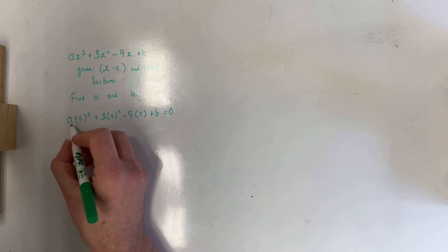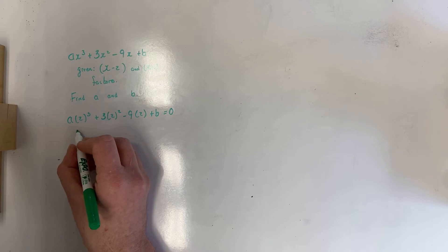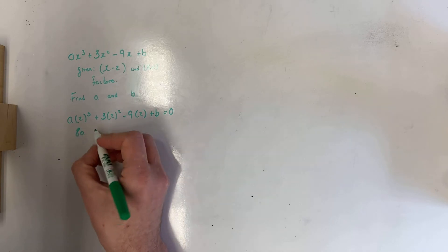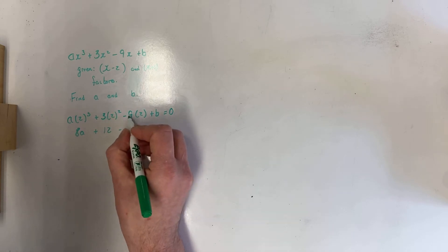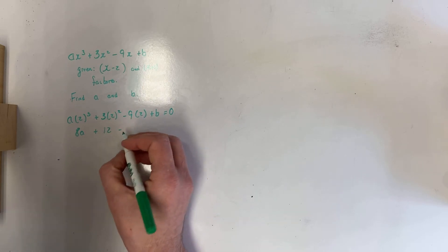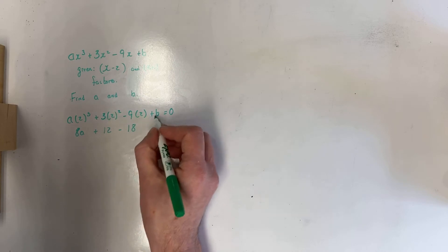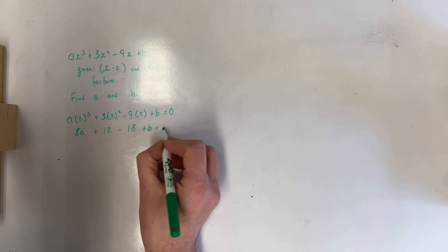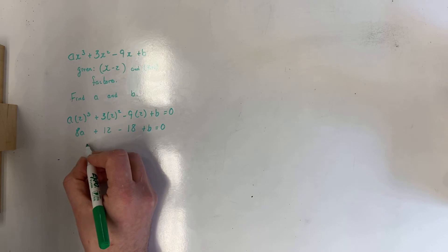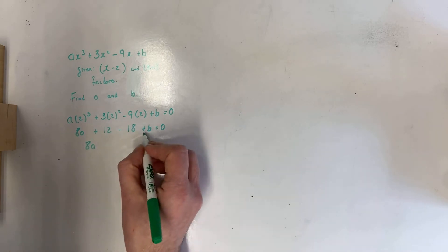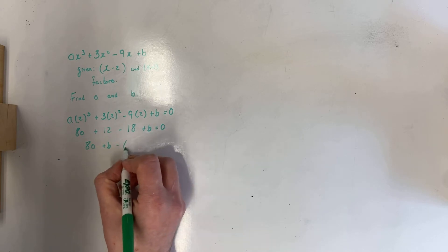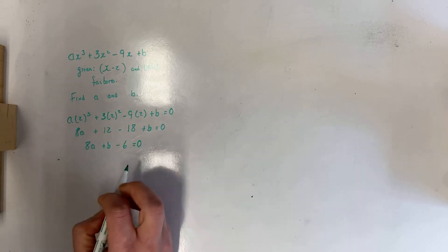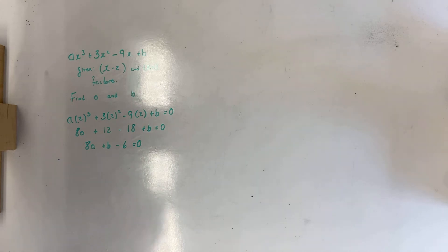Inputting 2 in for x, I get a times 2³ plus 3 times 2² minus 9 times 2 plus b, and this is equal to 0 because x minus 2 is a factor, meaning positive 2 is a root. Solving it: 2³ is 8, so 8a, plus 4 times 3 is 12, minus 9 times 2 is 18, plus b. Gathering terms: 8a + b - 6 = 0. I have one equation; I need to form another.